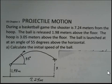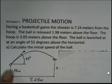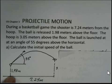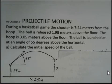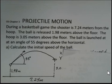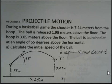In this projectile motion example, we're going to approximately model a basketball shot where the ball is launched on the left, 1.98 meters off of the floor, 7.24 meters away from the basket. It's launched at 55 degrees from the horizontal, and we want to calculate the initial speed of the ball. The target, the hoop, is 3.05 meters up off of the ground.